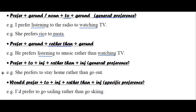You can also use 'to' plus infinitive after 'prefer', but in this case you can only use 'rather than', not 'to'. For example: 'She prefers to stay home rather than go out.' If you want to express a specific preference, you can use 'would prefer to'. For example: 'I would prefer to go sailing rather than go skiing.'